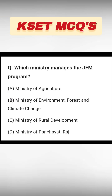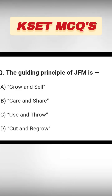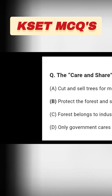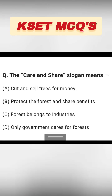The guiding principle of JFM is: grow and sell, care and share, use and grow, or cut and regrow. The right answer is option B: Care and Share — meaning protect forest and share benefits, not cut and sell trees or restrict forest to industries only.